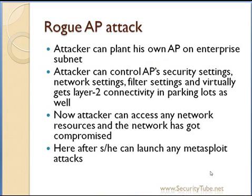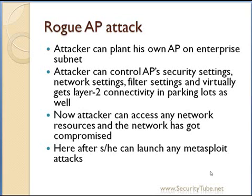This is the way the rogue AP attack works — the attacker plants his own AP on the enterprise subnet. The interesting thing to remember is that many times the attacker is not even required to plant his own AP, because there are already some non-administered, open, or not properly security-compliant access points lying around in enterprise subnets. This does happen in airports, hotels, or even big companies and enterprises. Many times employees bring their own access point to get better coverage in their office area or in conference rooms, and this opens a security hole to the enterprise network.